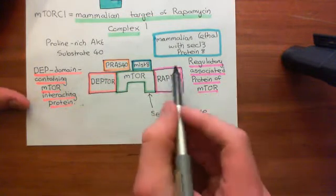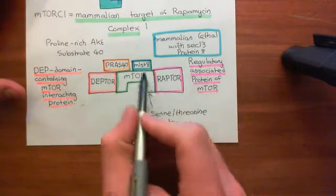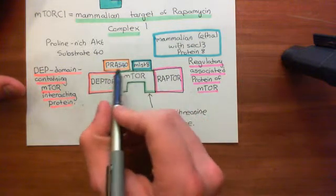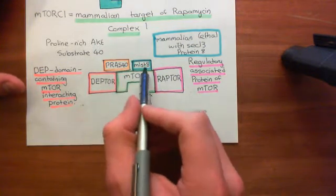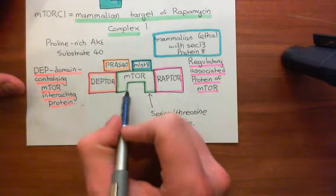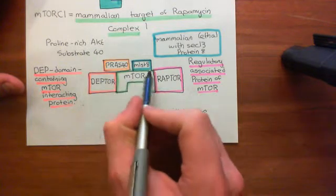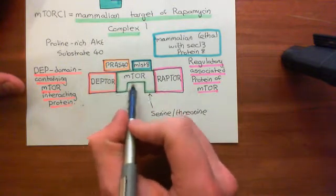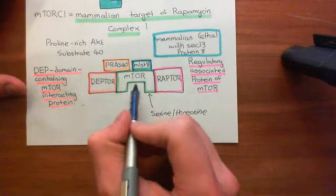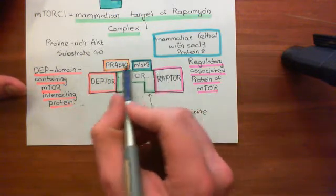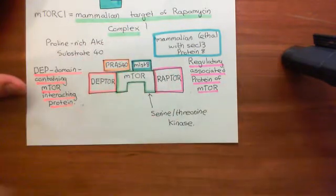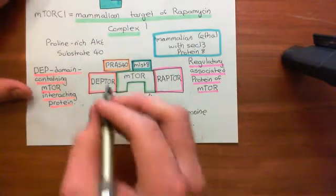The first thing to say is that it is not well understood what all of these accessory subunits are actually doing. The main functional protein is the central one — the mammalian target of rapamycin. This is a serine-threonine kinase, and all the other subunits are just accessory components stuck on the side.